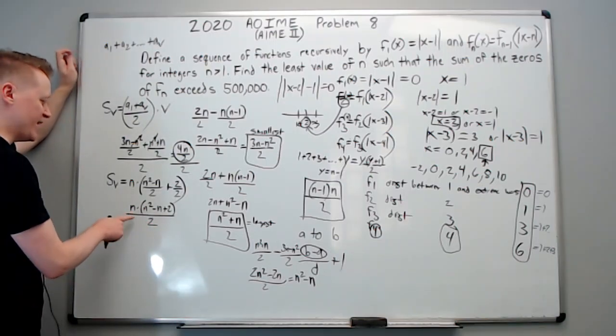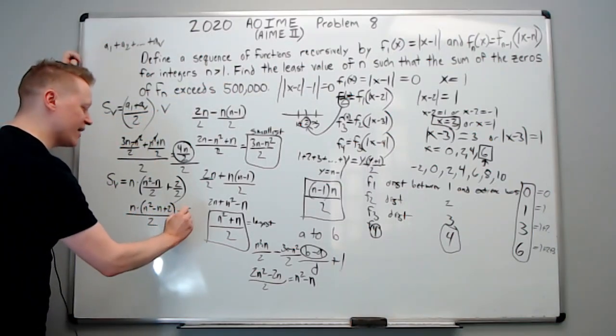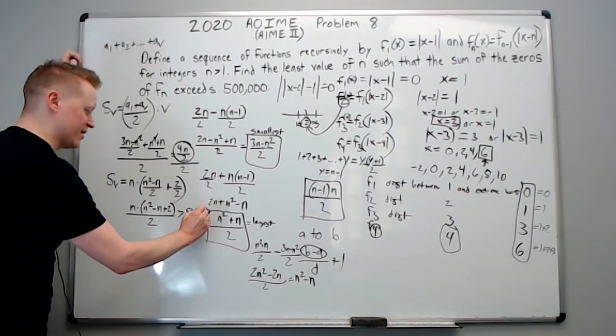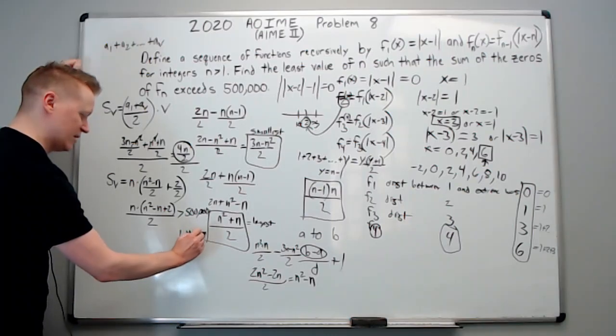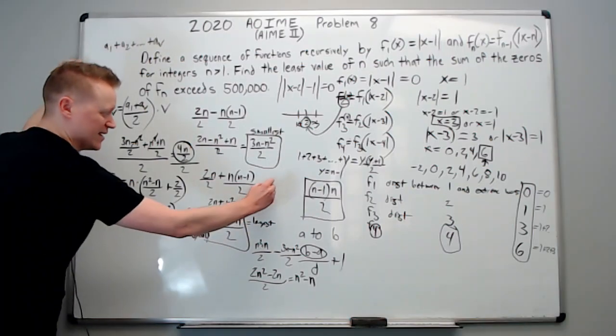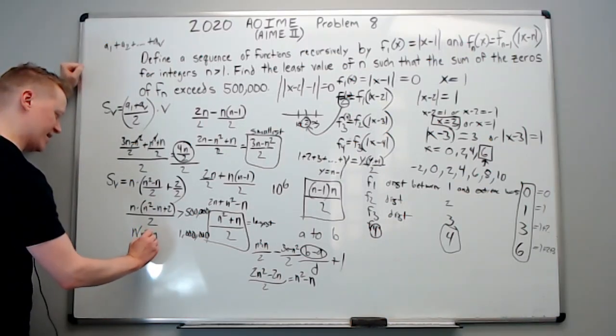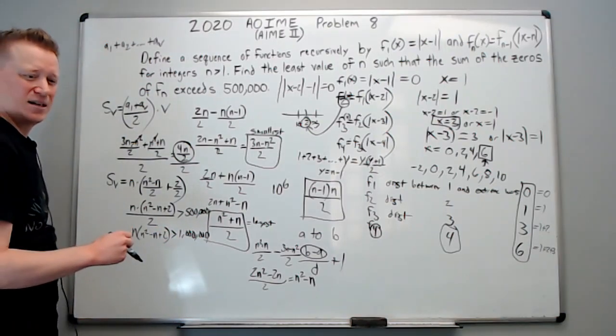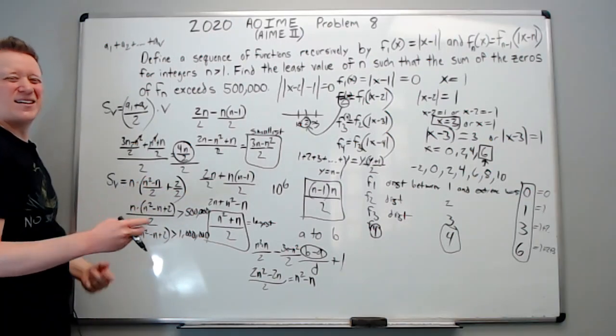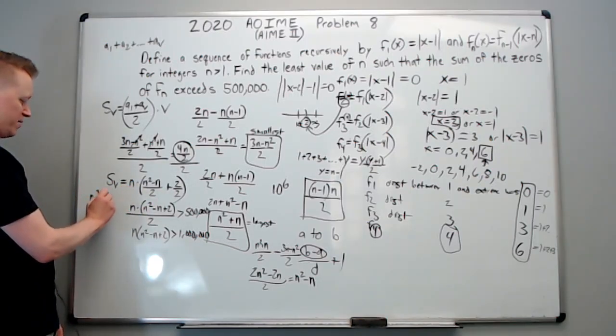Okay, this is the sum of the zeros of the sequence. And we want this to be greater than 500,000. We see very nicely that 2 multiplies to give us 1 million. Which you should also think of as 10 to the 6th. And now we're going to have n times n squared minus n plus 2 needs to be greater than 1 million. Okay, so what do we do then? Just trial and error. If I distribute this n, smart trial and error, you will get n cubed minus n squared plus 2n.